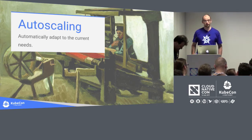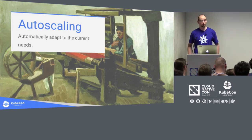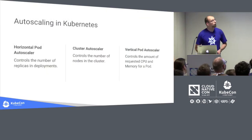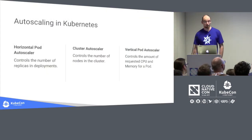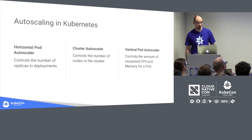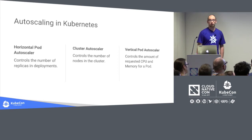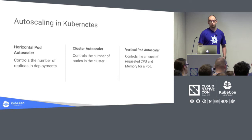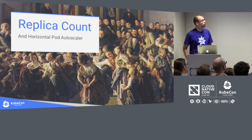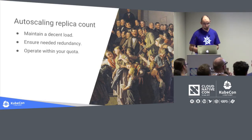But there is another way: auto scaling. Auto scaling is the ability of a system to automatically scale to current needs. It's a very nice feature we are incorporating into Kubernetes in a couple of places. We have horizontal pod autoscaler, which controls the number of replicas in a deployment; cluster autoscaler, which controls the number of nodes in the cluster; and vertical pod autoscaler, which is currently being designed and will control the amount of requested CPU and memory for a pod.